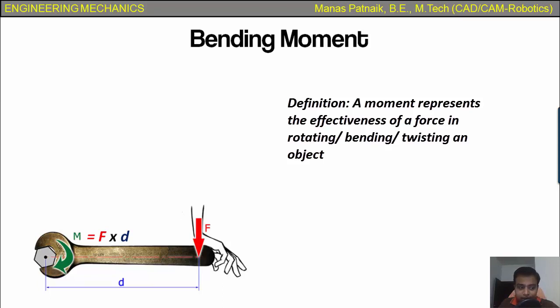This is where moment comes into the picture. Mathematically, moment is just a product of force applied and the perpendicular distance from the pivot. You can also say that a moment represents the effectiveness of a force in rotating, bending, or even twisting an object.